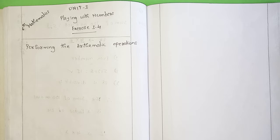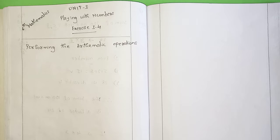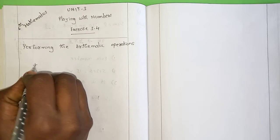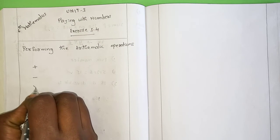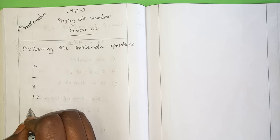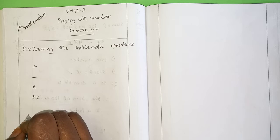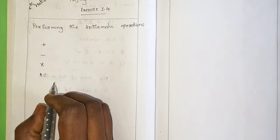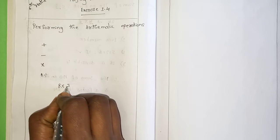Hi students, we are watching the sixth class mathematics unit 3 last video. I am going to tell you the last topic: performing the arithmetic operations. The operations we have are addition, subtraction, multiplication, and division. These are the arithmetic operations. For example, I have an expression like this: 18 × 2 ÷ 3...